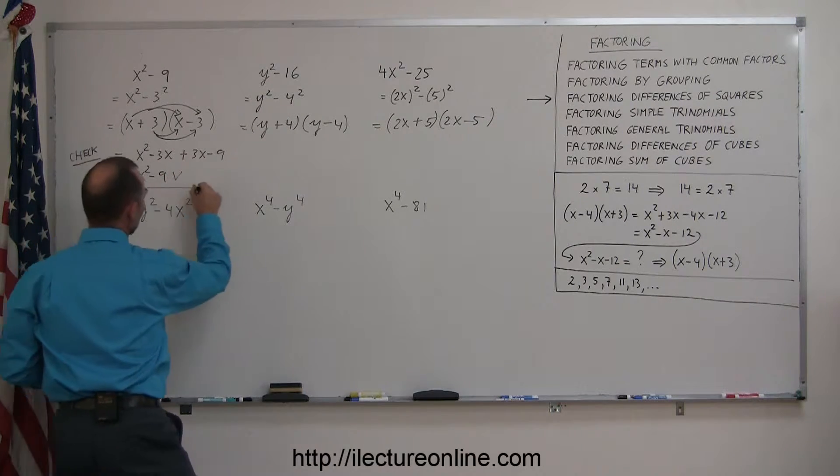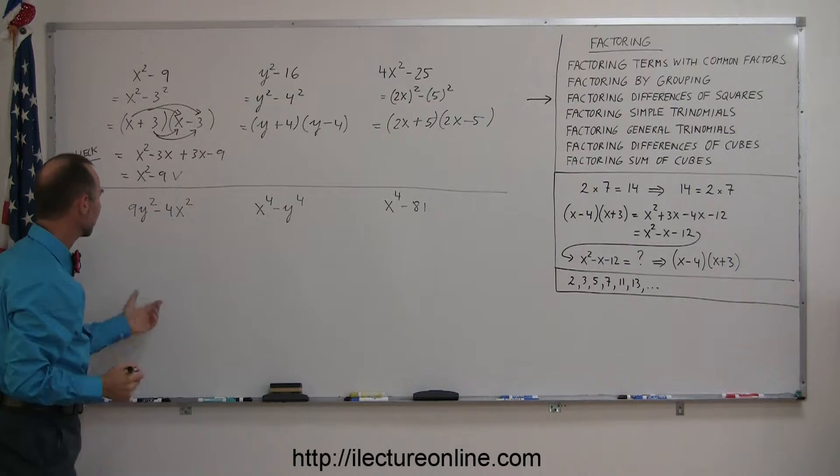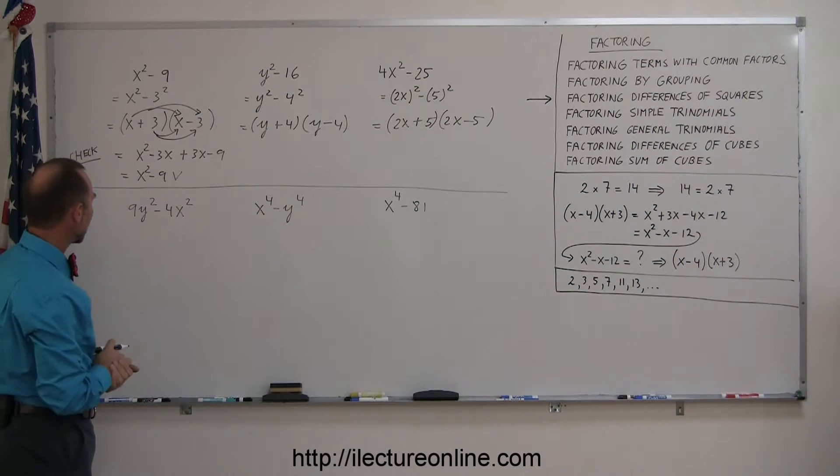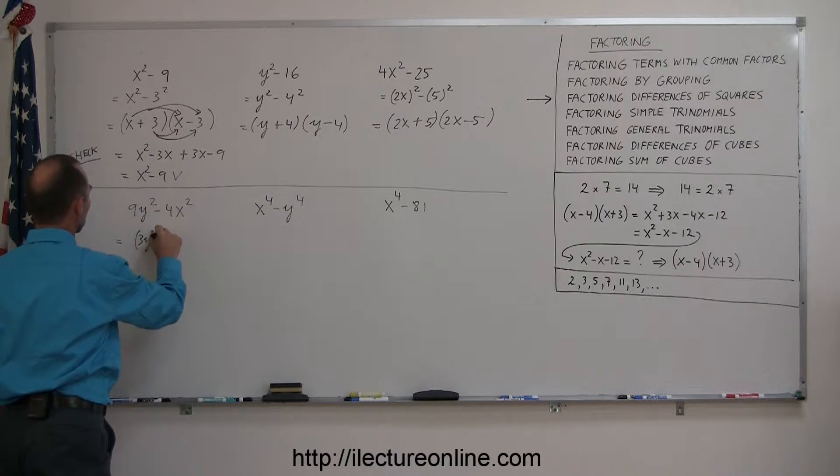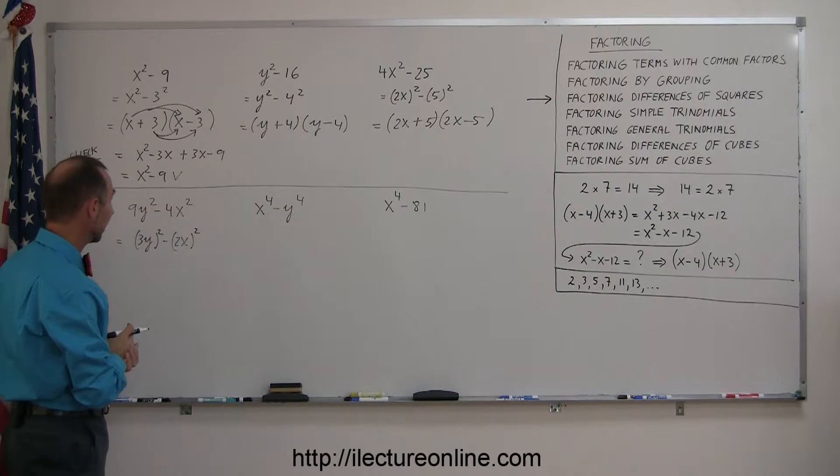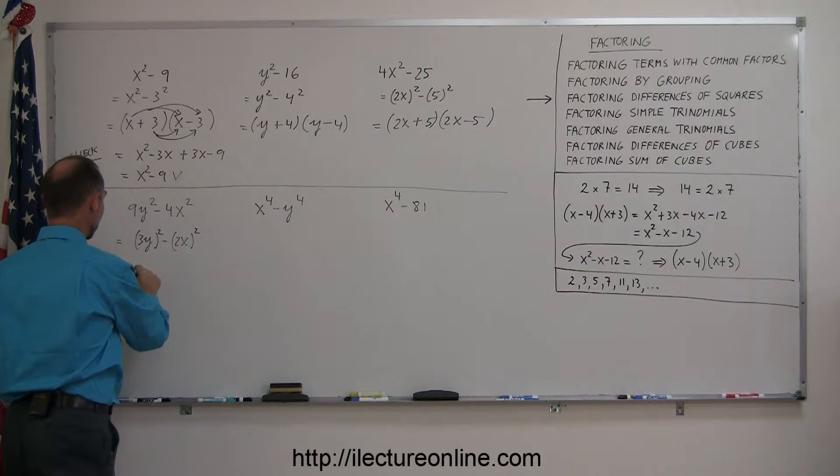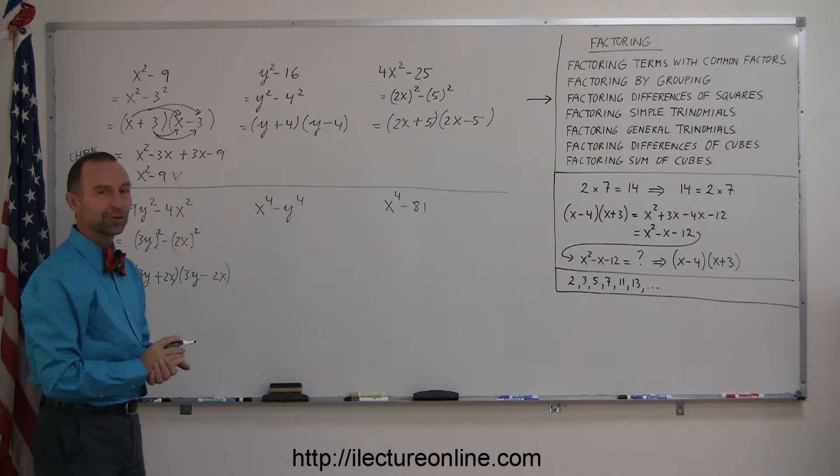Looking at this example, and let me draw a line so we don't confuse what we did over there. Notice here, we can write that as 3y quantity squared minus 2x quantity squared. It really helps to write it like this first, because then you can see what's being squared. And now we can simply factor that. We write the 3y and the 3y, the 2x and the 2x, a plus and a minus, and we finish factoring it.